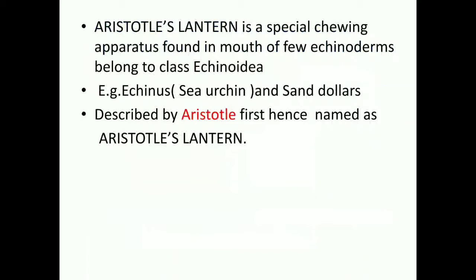Aristotle's lantern is a special chewing apparatus found in the mouth of few echinoderms that belong to class Echinoidia, like sea urchin and sand dollars. Some echinoderms like sea urchin and sand dollars have this special apparatus in their mouth which helps them to chew food. It was first described by Aristotle, which is why it is named Aristotle's lantern.